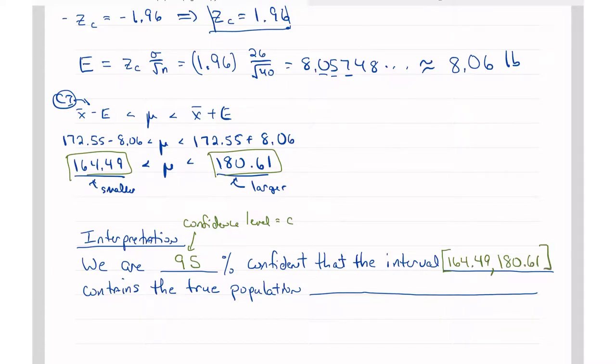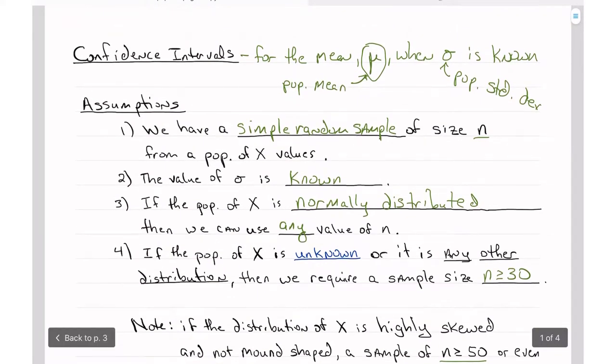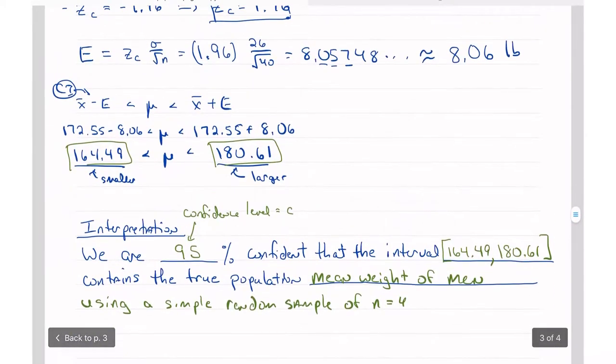And then we have to describe the true population. What is it? It's the mean, true population mean weight of men. And I like to add using a simple random sample of n equals 40 individuals.